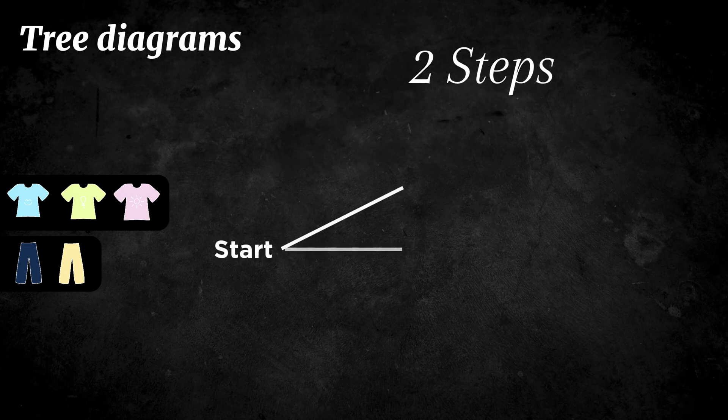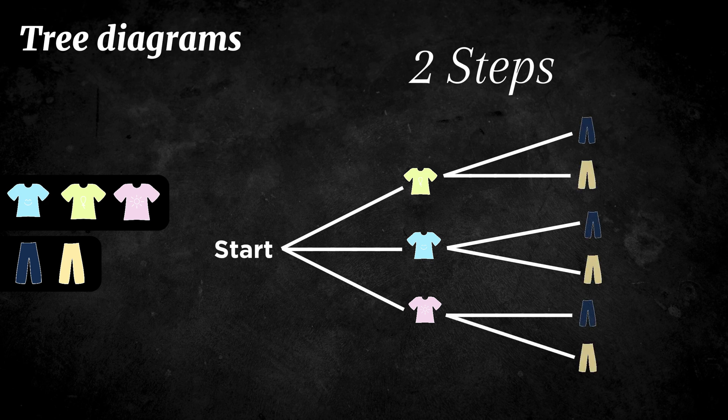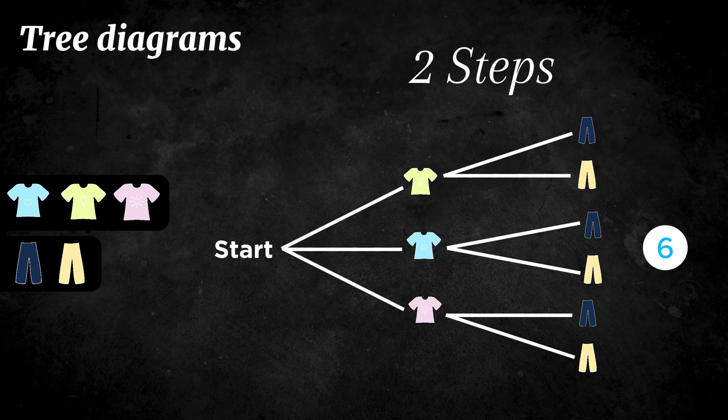First, draw three branches. These will represent the choices you can make for the shirts. You draw three lines because you have three shirts. Then, from each shirt, draw two branches for the pants because when you choose a shirt, you still have two choices for the pants you want to wear. If you count all the branches at the end, you will see there are six possible outfits.